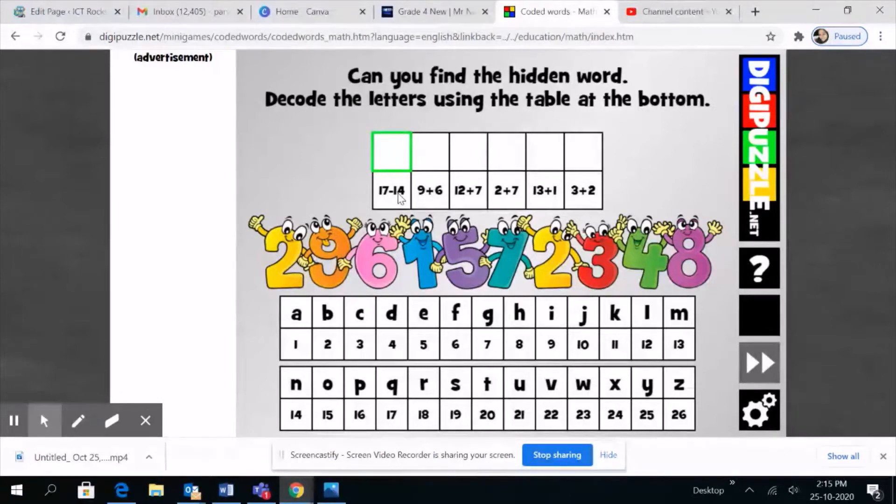What is 17 minus 14? Yes, the answer is three. So you need to figure out which letter corresponds to three. Can you spot three on the table? Three corresponds to the letter C, so you're going to click here and type C.